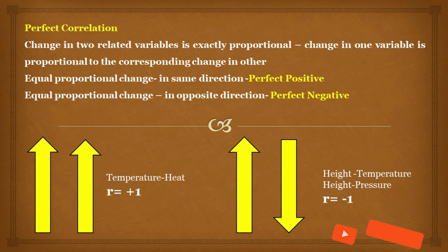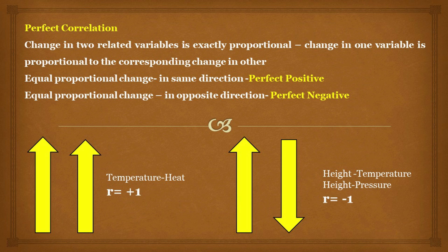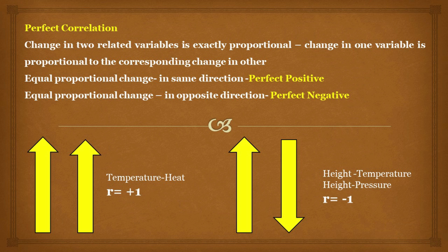Good examples of perfect correlation include: temperature and heat, and rainfall and runoff, which represent perfect positive correlation; whereas height and temperature, and height and pressure, denote perfect negative correlation.